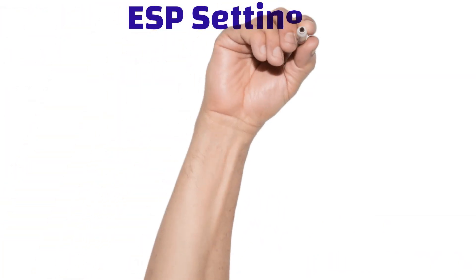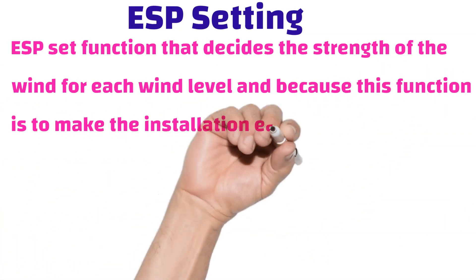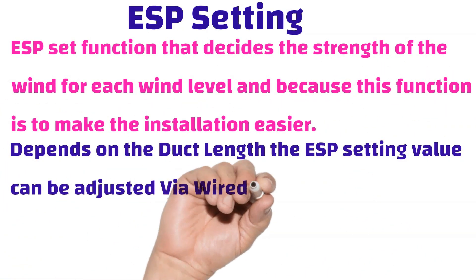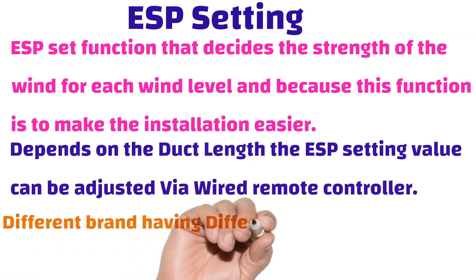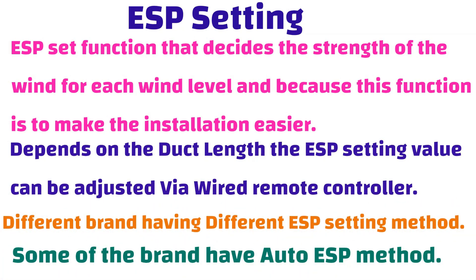ESP setting. ESP set function decides the strength of the wind for each wind level and this function makes the installation easier. Depending on the duct length, the ESP setting value can be adjusted by wired remote controller.